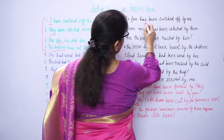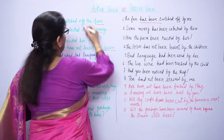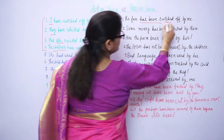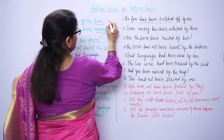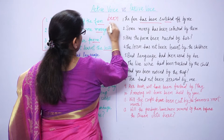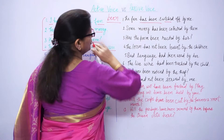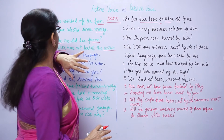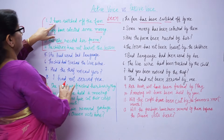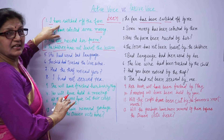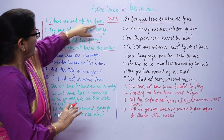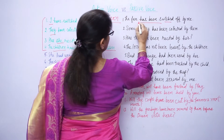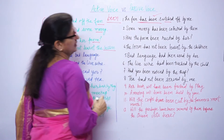Perfect tense — jab hum passive mein change karte hain — has and have is already there. And I told you, always use the third form of the verb. What you have to use? Been. Been aapko passive voice mein use karna hai. Has or have — dono ka use bhi aapko dekhna hai. With 'I', have is used. And now, fan is subject, singular noun. So has been used, and been has been added.